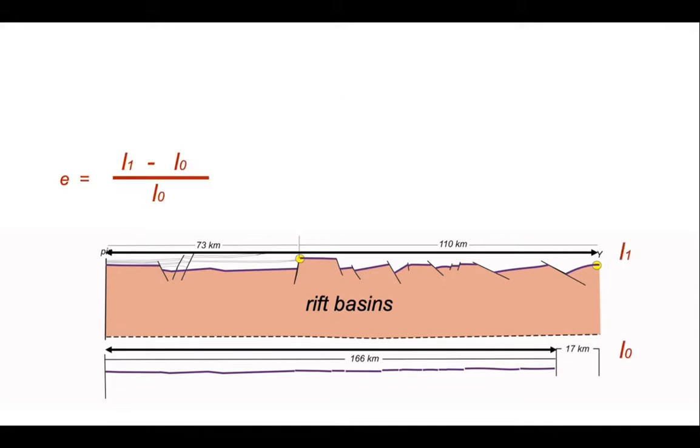Now, the length of the rift basins is our L1, because this is the deformation we're interested in. L0 is that restored length for the top of the crust. So those are the values. L1 is 183 kilometers.